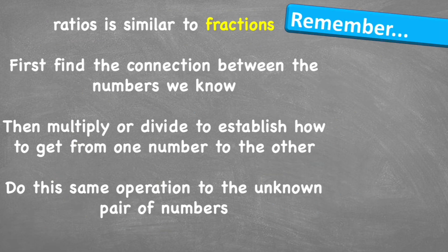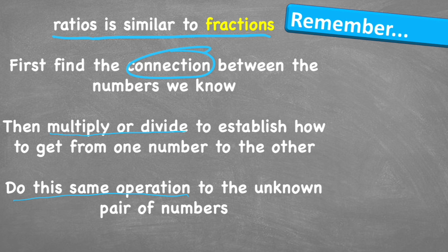Let's look at what to remember. Ratios are similar to fractions. First, find the connection between the numbers we know, whether it's the first or the second digit of the ratio. Then we're going to use multiplication or division to establish how to get from one number to the other. And then we're going to use this same operation to the unknown pairs of our ratios.